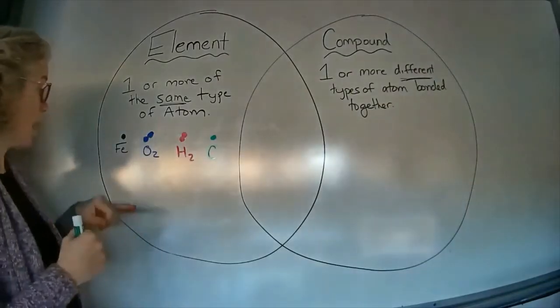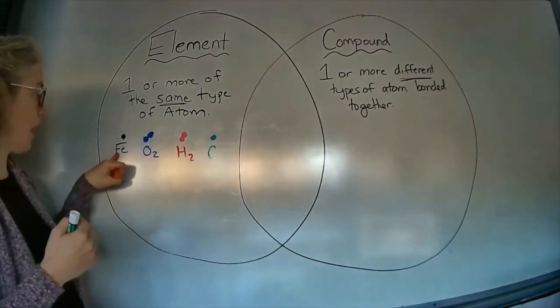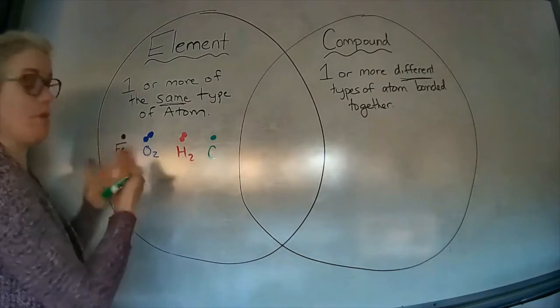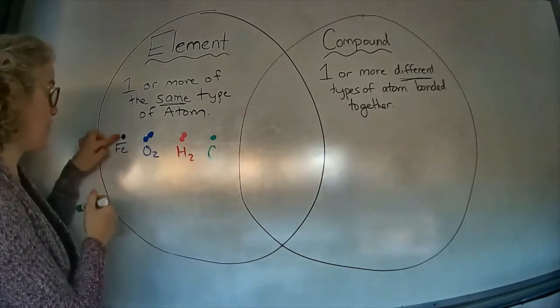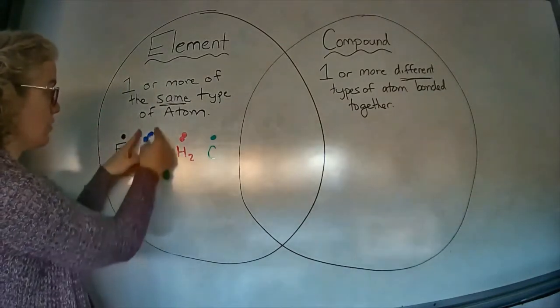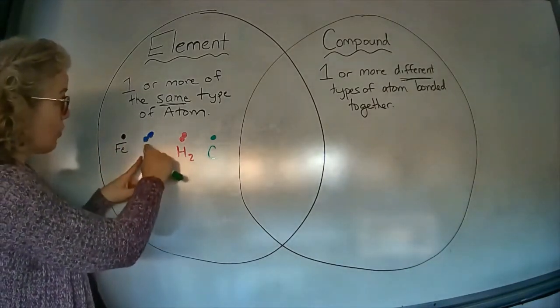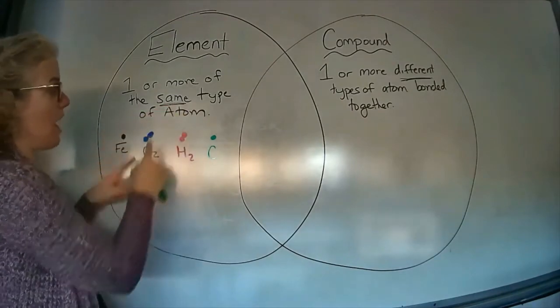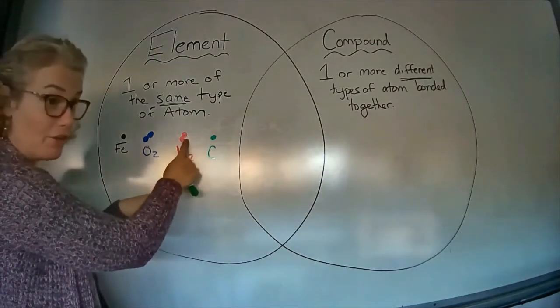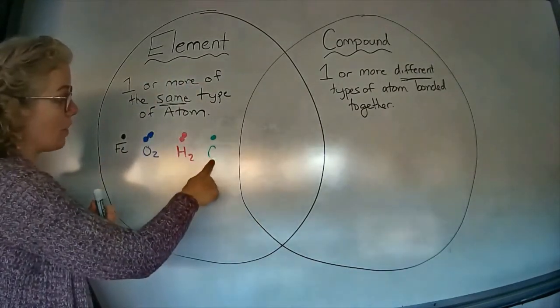Here are some pictures to represent elements. Elements are always found on the periodic table, and you would find at least one capital letter and sometimes also a lowercase letter. These dots I'm using to represent atoms have the same color dot for each element. Here's the element iron, the element oxygen. Notice oxygen tends to like to bond to itself, so we've got two of the same type of atom, but it's still an element. Hydrogen also likes to bond to itself, but it's the same type of atom, so it counts as an element. And here we have carbon.